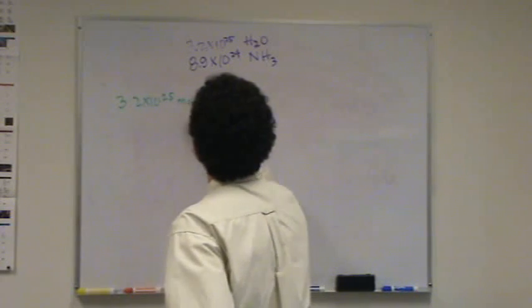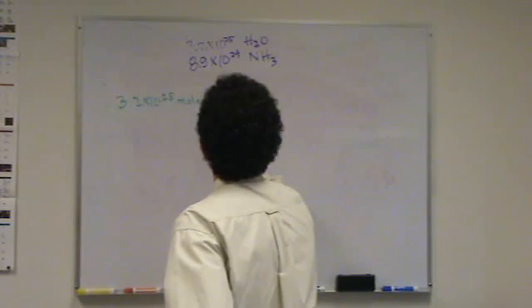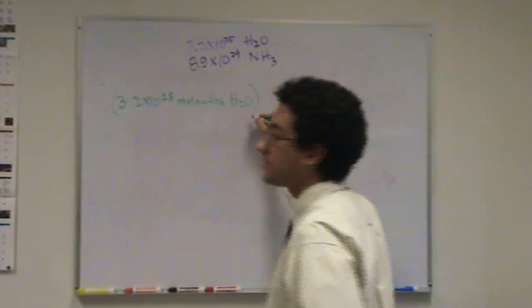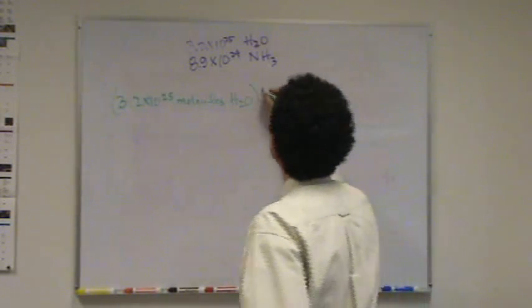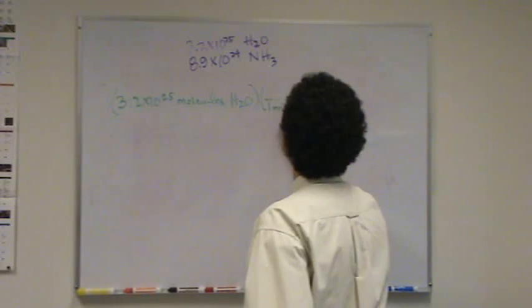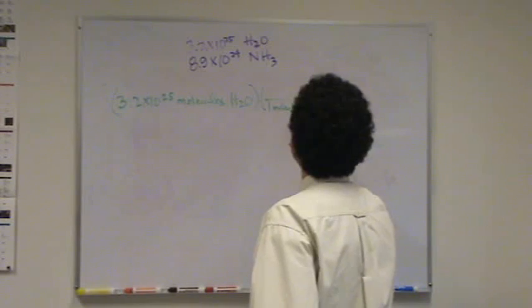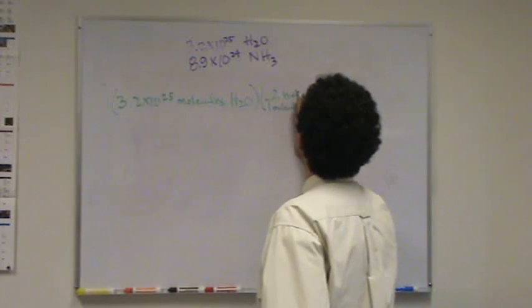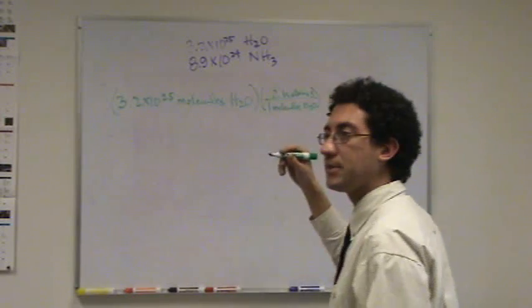So, this is molecules of water. I don't want molecules. I want hydrogen. So, it's going to be a pretty quick step here. For every one molecule of water, there's two H atoms. Hopefully, that makes sense. Two atoms in water.